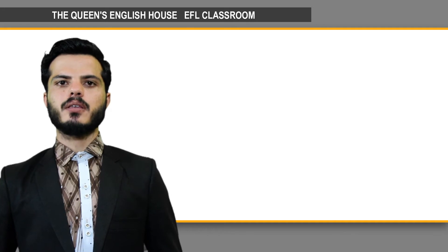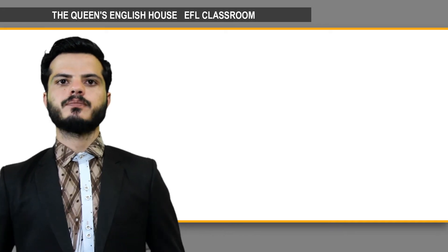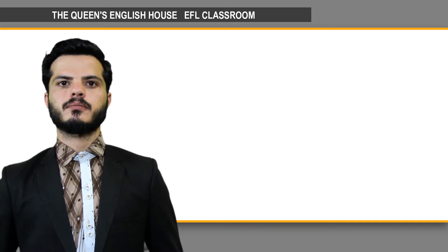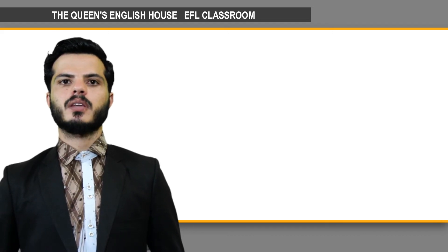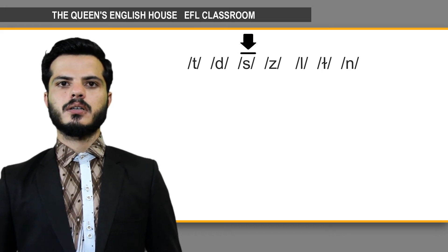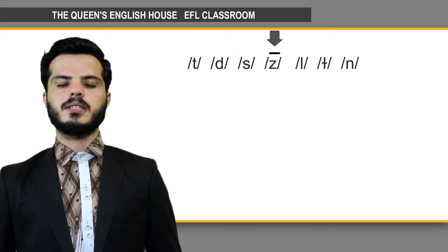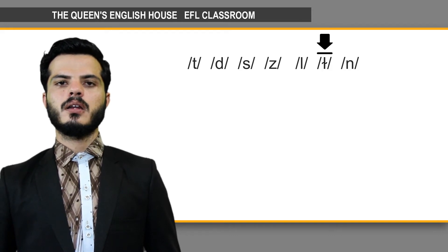There are seven sounds in this chapter, which makes it the longest category of consonants. These seven sounds are: t, d, s, z, l, l, and n.